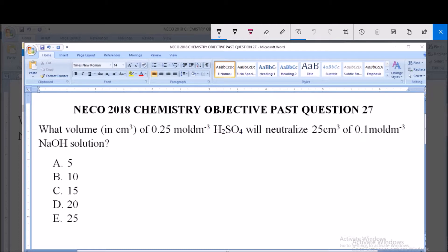What volume in cm³ of 0.25 mol/dm³ H₂SO₄ will neutralize 25 cm³ of 0.1 mol/dm³ NaOH, sodium hydroxide solution? A: 5, B: 10, C: 15, D: 20, and E: 25.